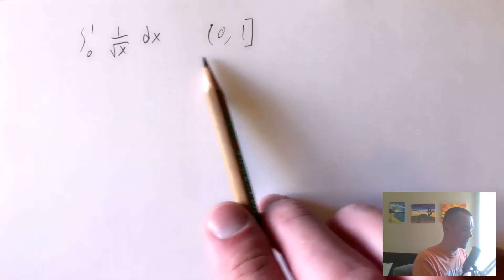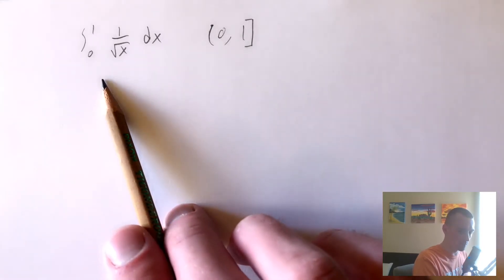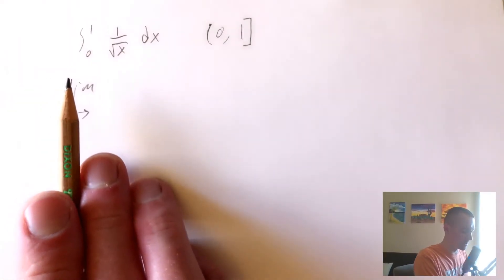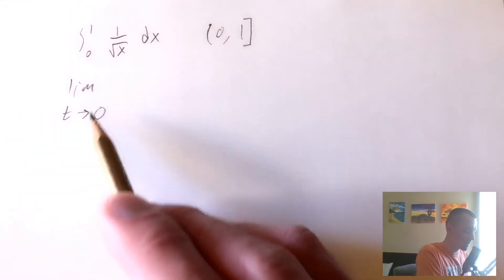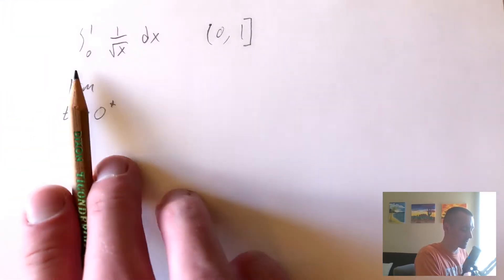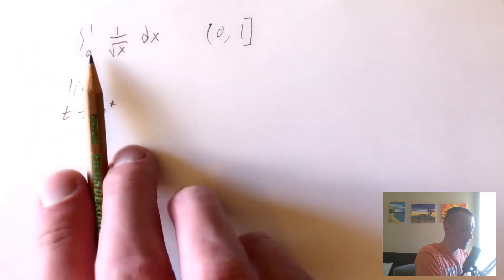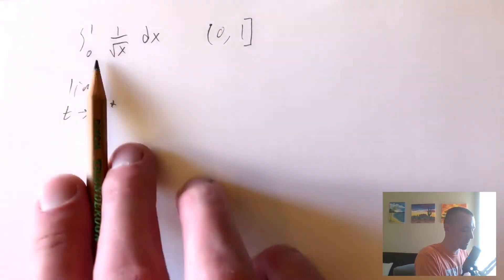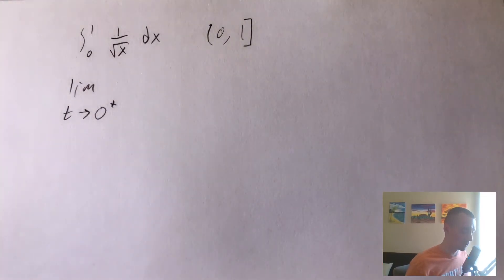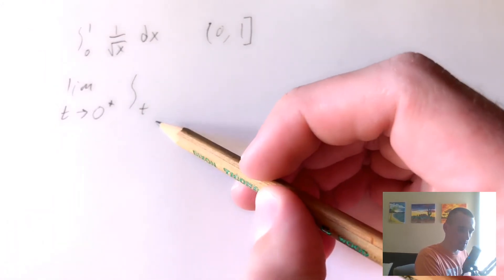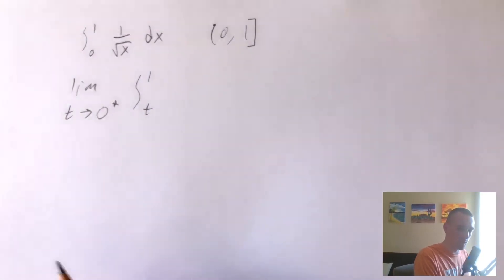Basically what this formula tells us is if we know this is the case, we can rewrite this integral as the limit as T goes to our endpoint where the function is not continuous — so as T goes to 0 from the right, because this function is defined for x greater than 0. We take the limit as T goes to 0 from the right and integrate from T instead of 0 up to an upper bound of 1.